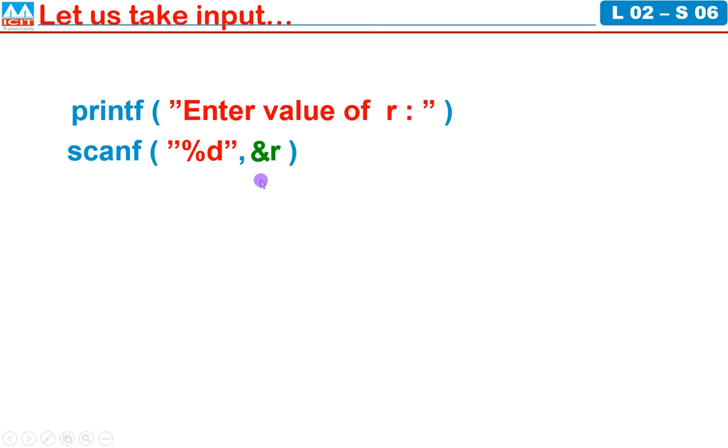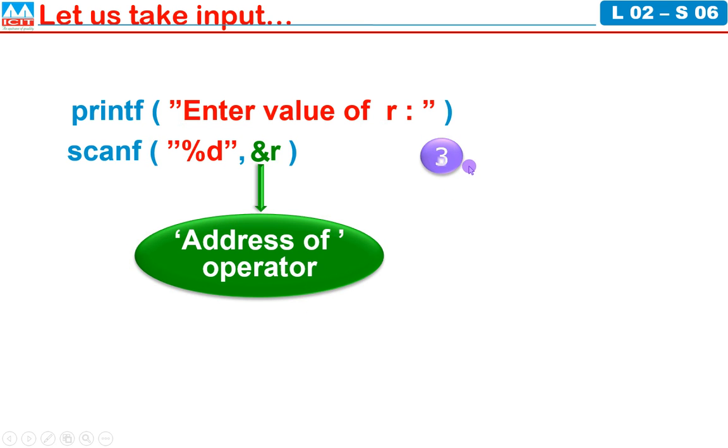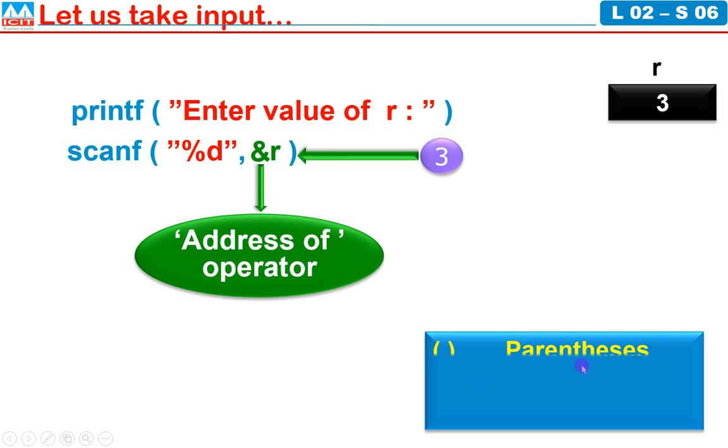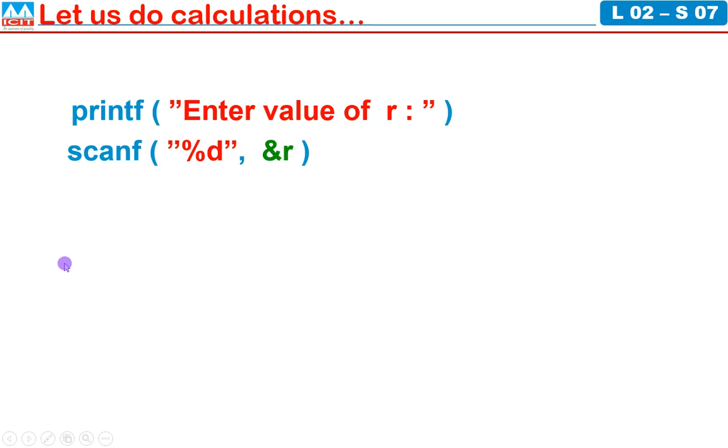The r variable has an ampersand symbol. This is not ampersand. We call it as address of operator. If user types 3 value, that 3 will be received in the form of integer and will be stored in the variable r. So r value will be 3. That's why I am placing r star r.